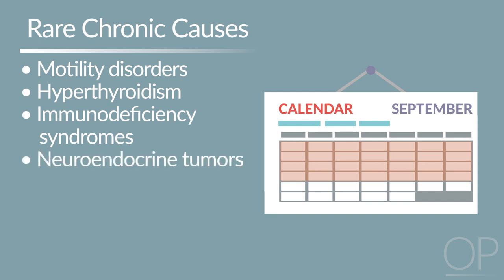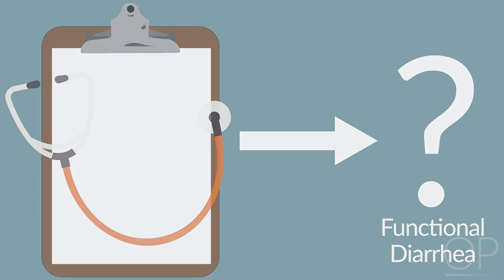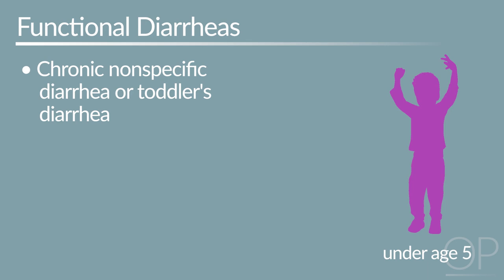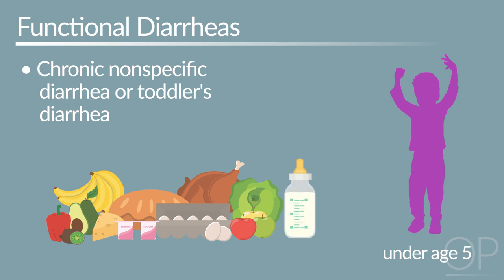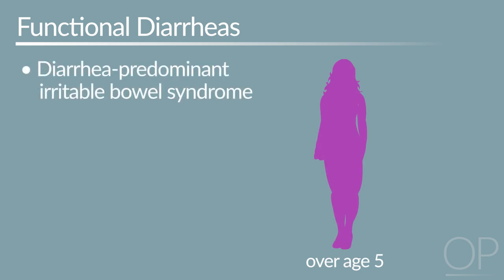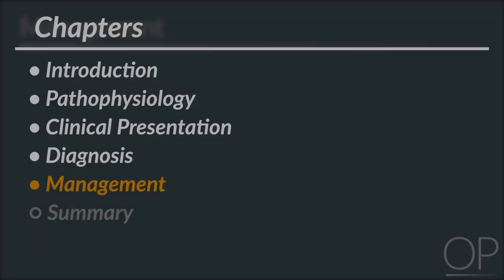Neuroendocrine tumors, and if seen in neonates or infants, congenital enteropathies. Diarrhea that does not reveal an organic cause on workup — meaning there is not an identifiable anatomic, chemical, or biologic cause — is referred to as functional diarrhea. In children less than 5, this is called chronic nonspecific diarrhea, or toddler's diarrhea, which can be due to overfeeding, excessive formula intake, or a diet high in fruit juice or sorbitol. In children over 5, one of the most common functional diarrheas is diarrhea-predominant irritable bowel syndrome, or IBS, which can be diagnosed with the Rome 4 criteria and includes an association with abdominal pain.